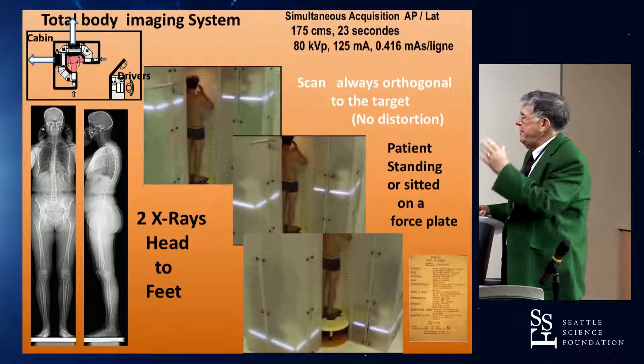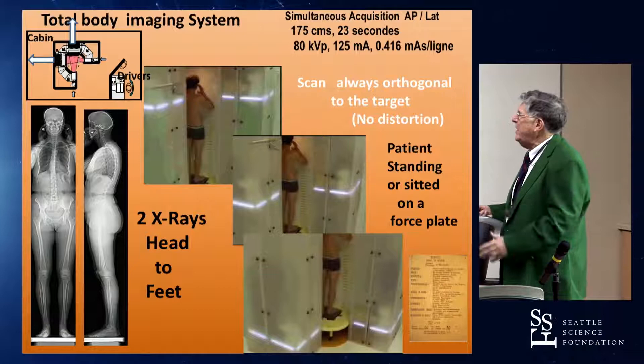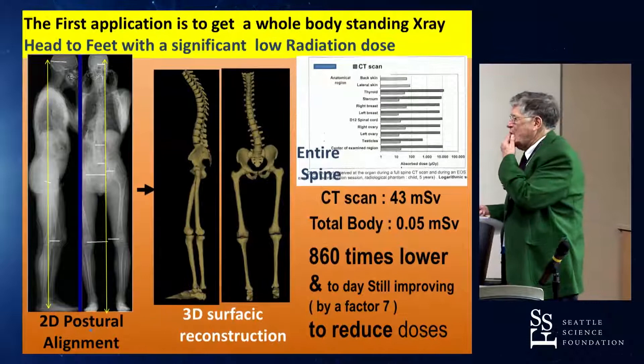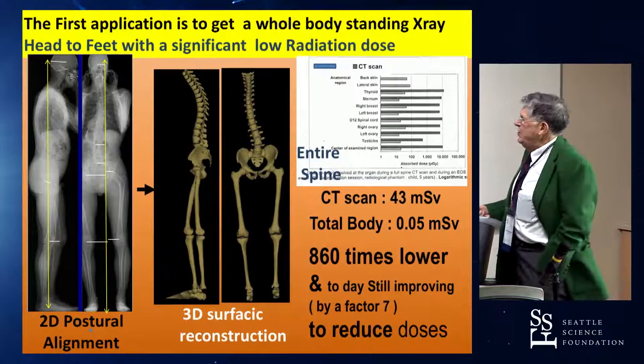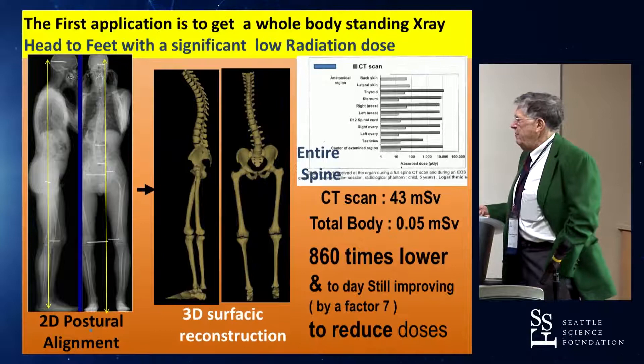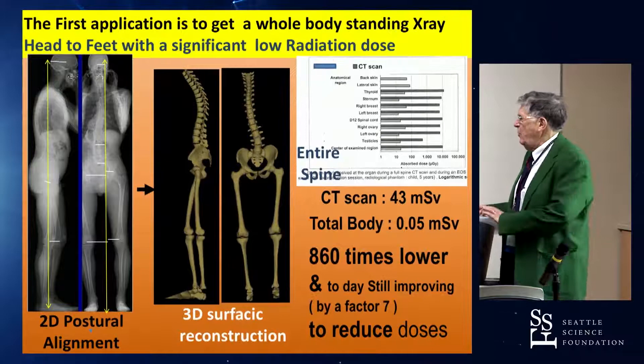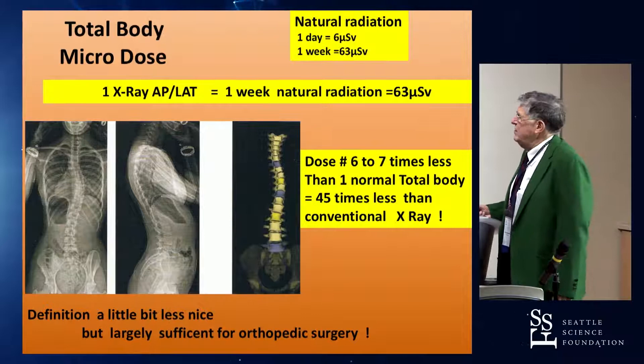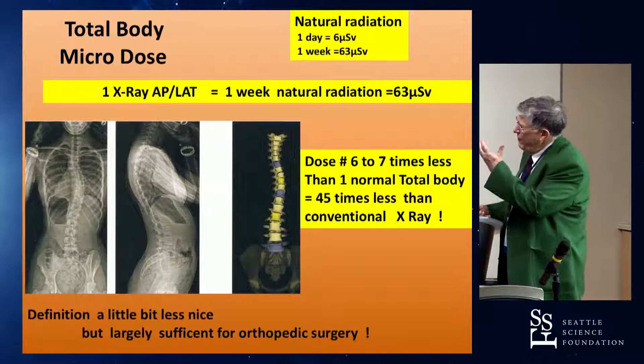We experimented this system as soon as that time. It was two x-rays, frontal and sagittal at the same time, simultaneous acquisition, and scanning always orthogonal, so no distortion from the target. We have 2D postural alignment, but also 3D surface reconstruction. The reduction of radiation was very significant — comparing to reconstruction done with the CT scan, we have 806 times lower, and still reducing because of the low dose we can get now with this device.